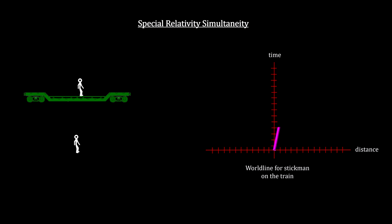In order for the light to reach the person on the train at the same time, the strike behind him will need to hit first, from the person on the ground's point of view, because it will have to travel further to get to the moving person than the light from the strike that hits in front of him.